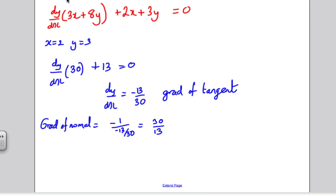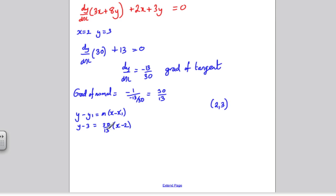And now I can use the equation of the straight line in order to work out the equation of the normal. So I'm going to use the equation of the straight line y minus y1 equals m(x minus x1), and we know that the normal goes through (2, 3). So we're going to say y minus 3 is 30 over 13, x minus 2. I'm going to multiply everything by this 13 to remove it, so I'm going to get 13y minus 39 equals, and then multiply these two terms by the 30, 30x minus 60.